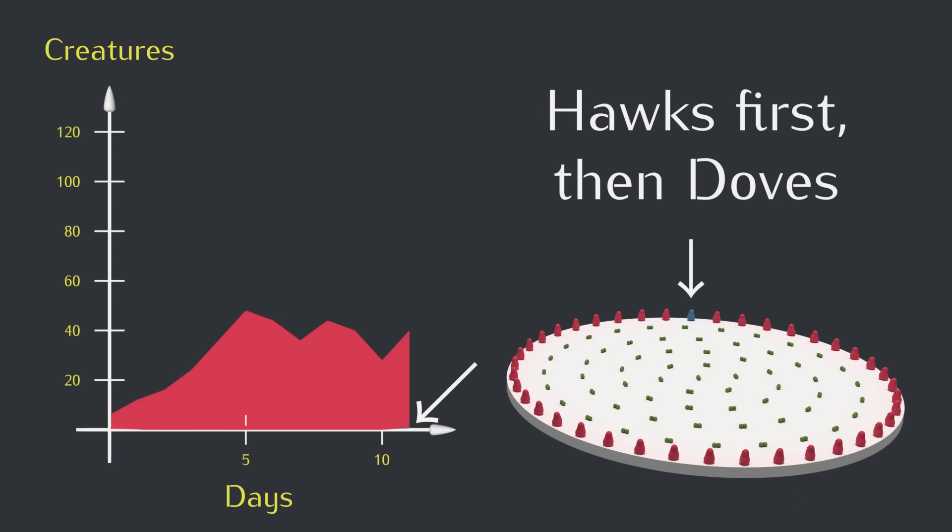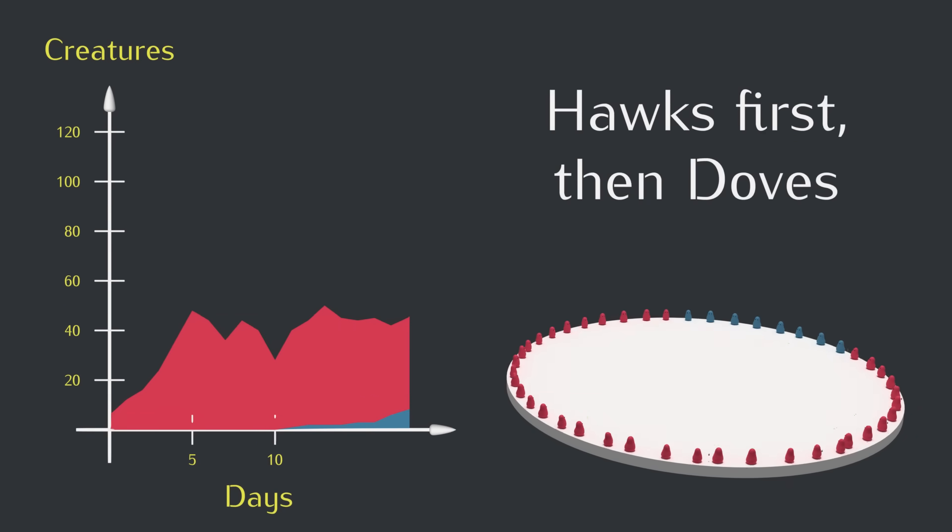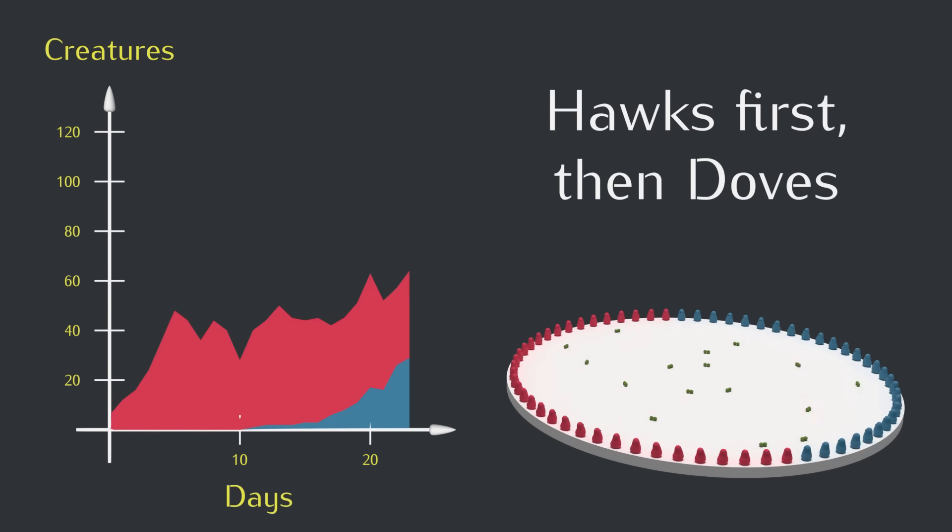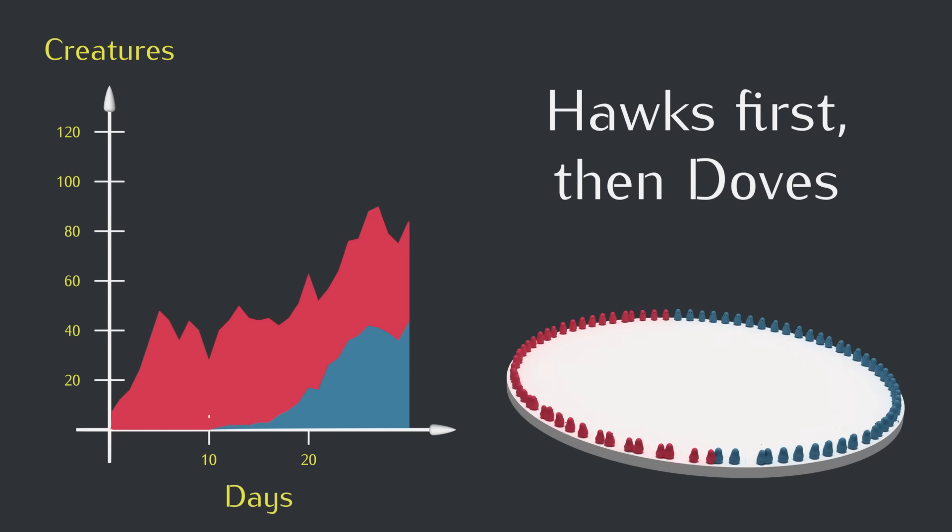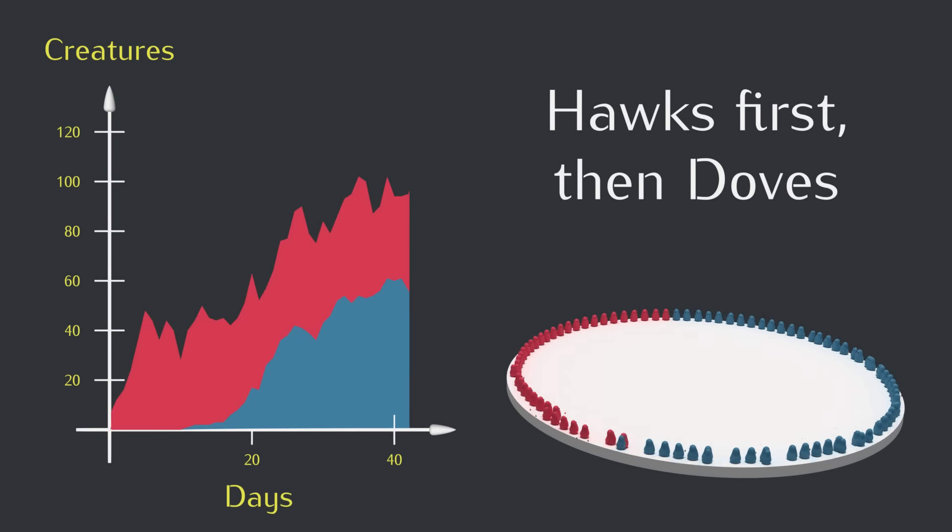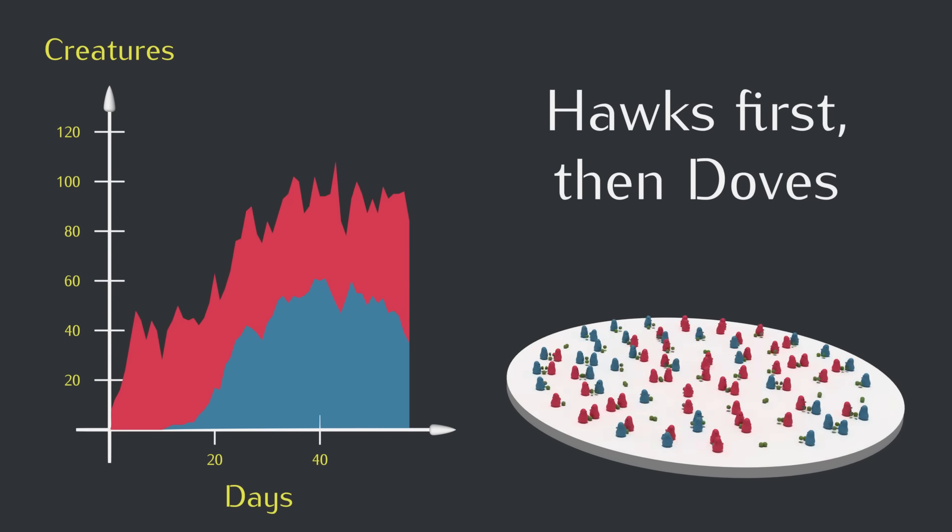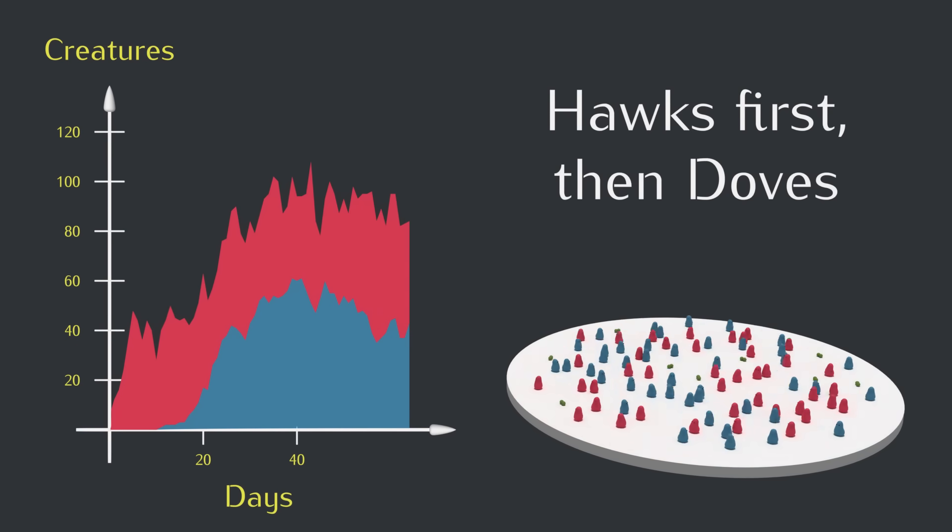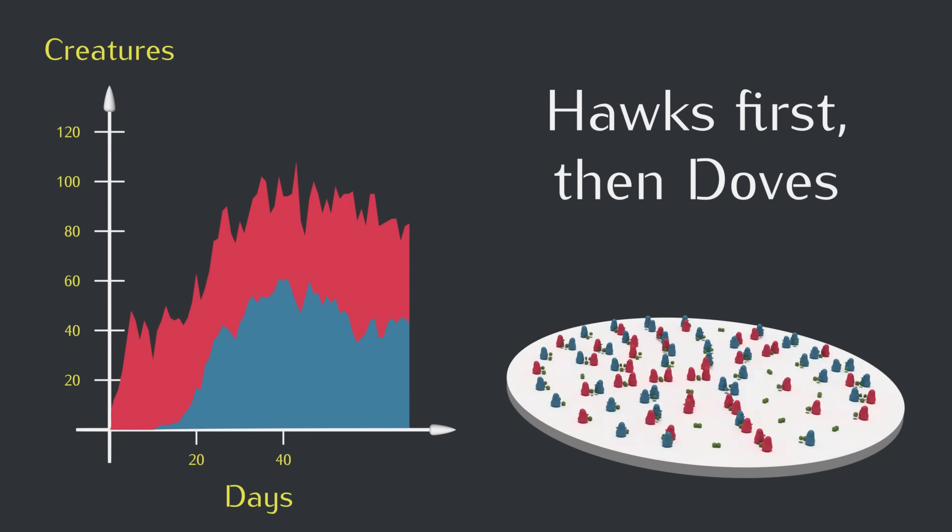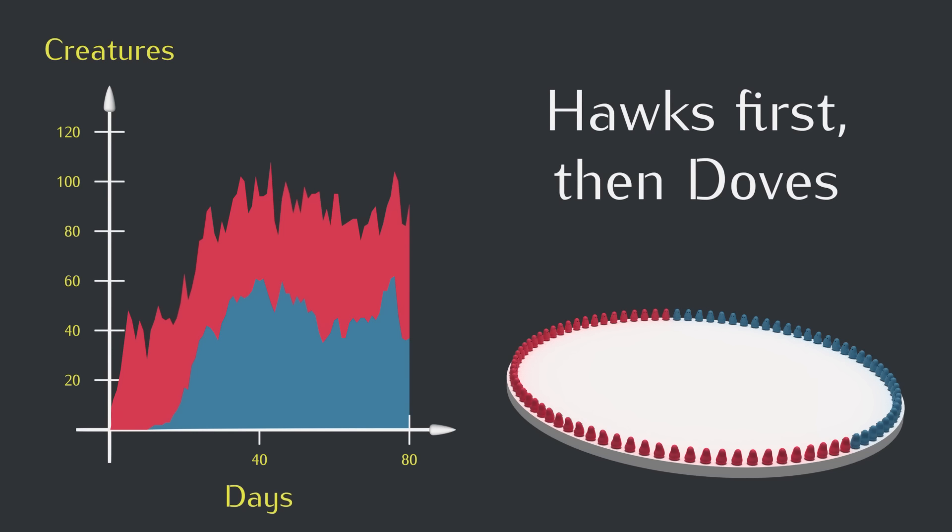Now, if we add a dove to the mix in the next day, what do you think will happen? Okay, so it took the doves a little while to gain a foothold here, but eventually we end up in a similar situation, with a fluctuating mixture of hawks and doves.